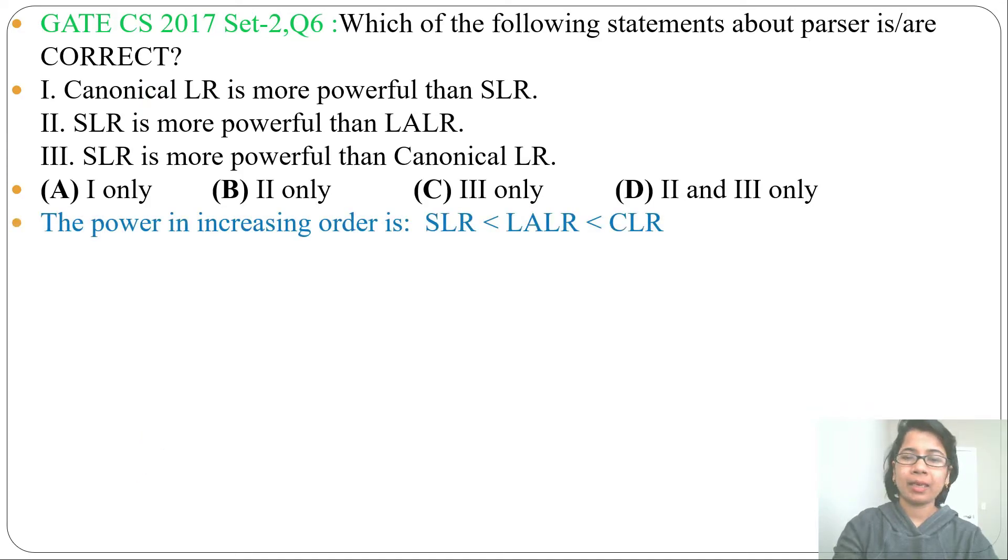According to power, SLR has the lowest power, then LALR, then CLR. Statement 1: Canonical LR is more powerful than SLR. Yes, this is correct.